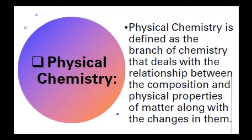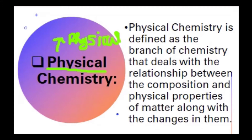The first branch of chemistry is physical chemistry. The word 'physical' relates to physical appearances — what we can see. Physical appearance, physical characteristics, and physical properties — studying these physical characteristics and physical properties is called physical chemistry.